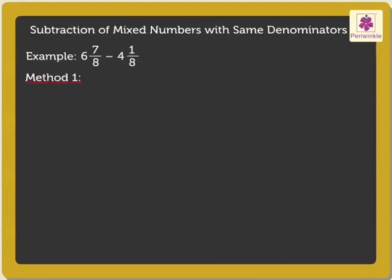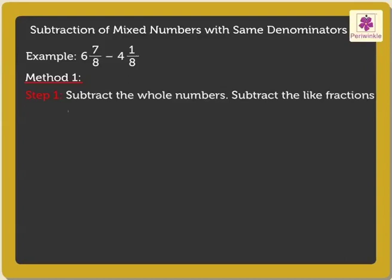Method 1, Step 1: Subtract the whole numbers. Subtract the like fractions and reduce the difference to its lowest terms.